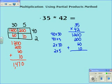In the end, I'm going to add up my numbers, and my answer again is 1,470. Either method is using partial products. It just depends on which setup you prefer.